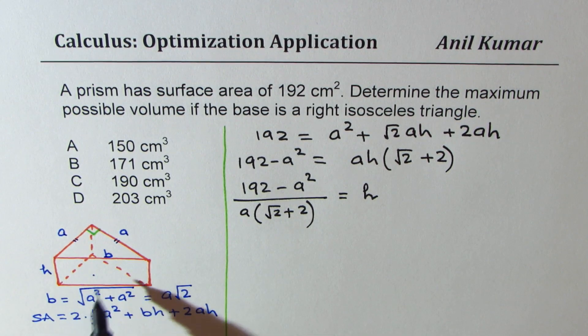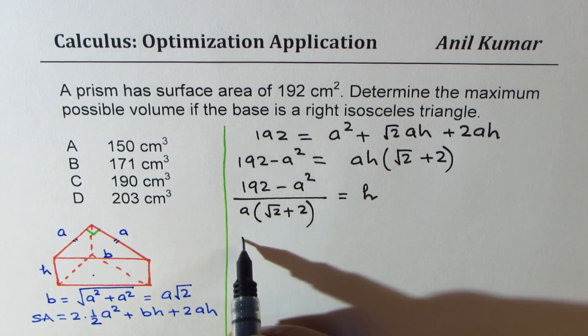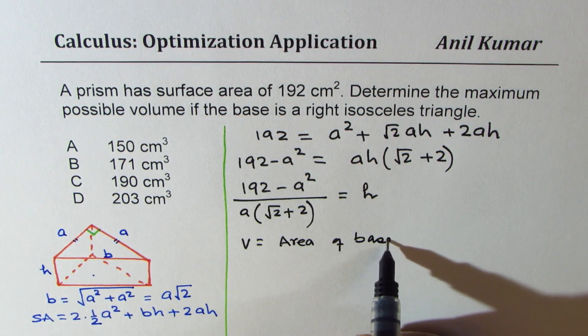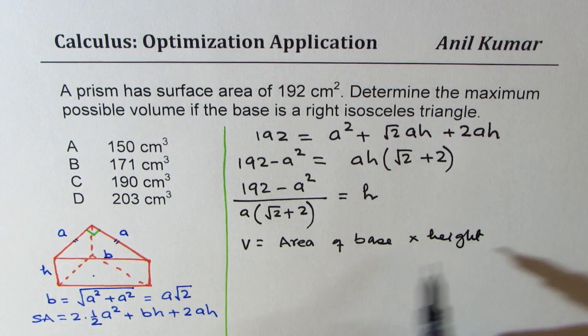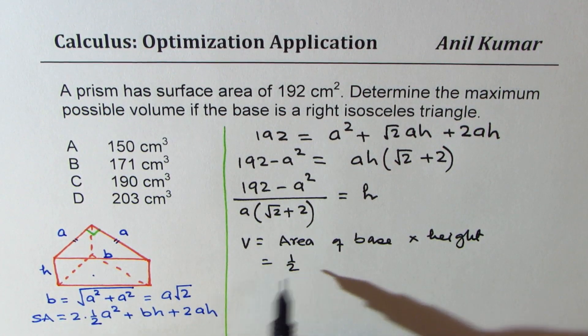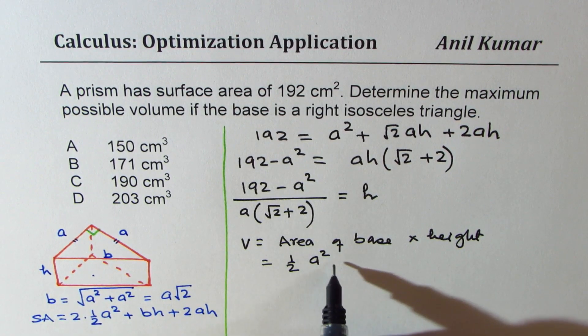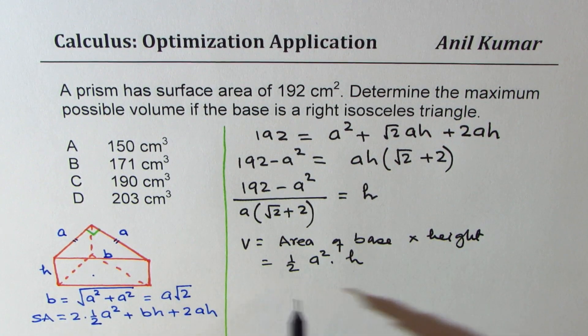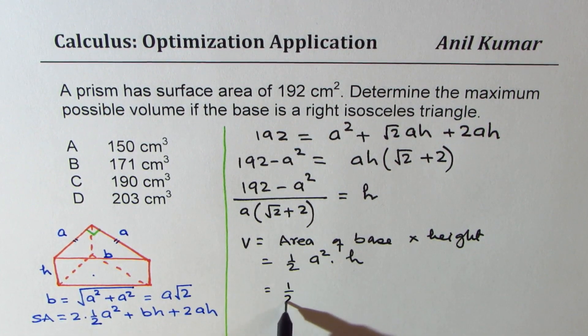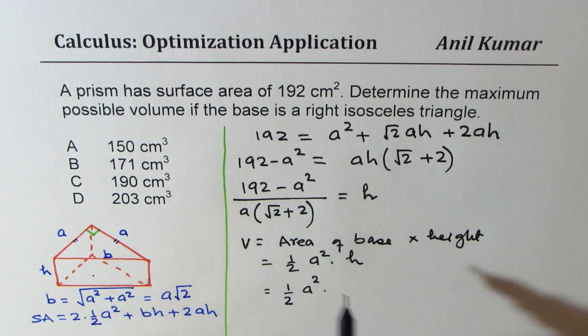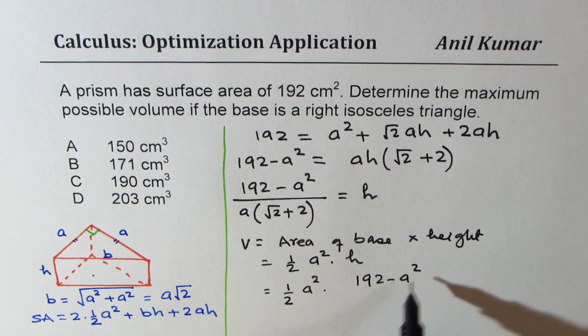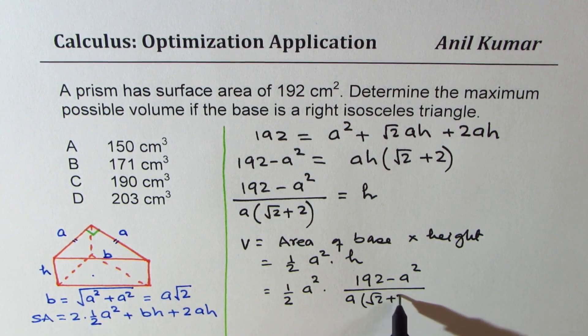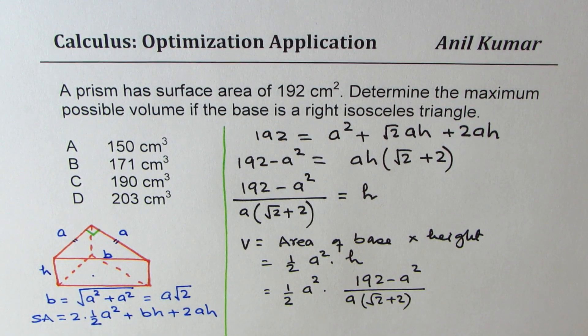Now this is equal to h. So what is volume of such a prism? Volume is area of base times height. Now area of base is half a square and height is h. We can always write height as shown above. So that gives us volume as half of a square times all this which is 192 minus a square divided by a times square root 2 plus 2.